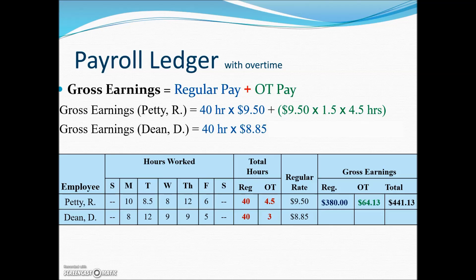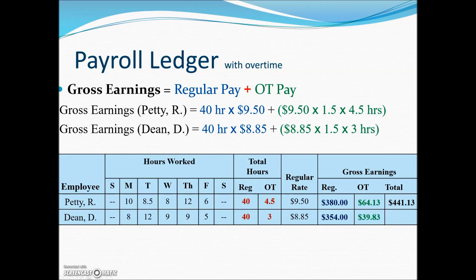Similarly for D. Dean, subtracting 40 from the total leaves 3 hours of overtime. Forty hours at an $8.85 hourly rate gives us $354.00 of straight pay. Then calculating the overtime pay, we can do this in one calculation: regular hourly rate times 1.5 times the number of overtime hours, which was 3, gives us just shy of $40.00. Adding regular and overtime together gives us the gross pay for D. Dean.